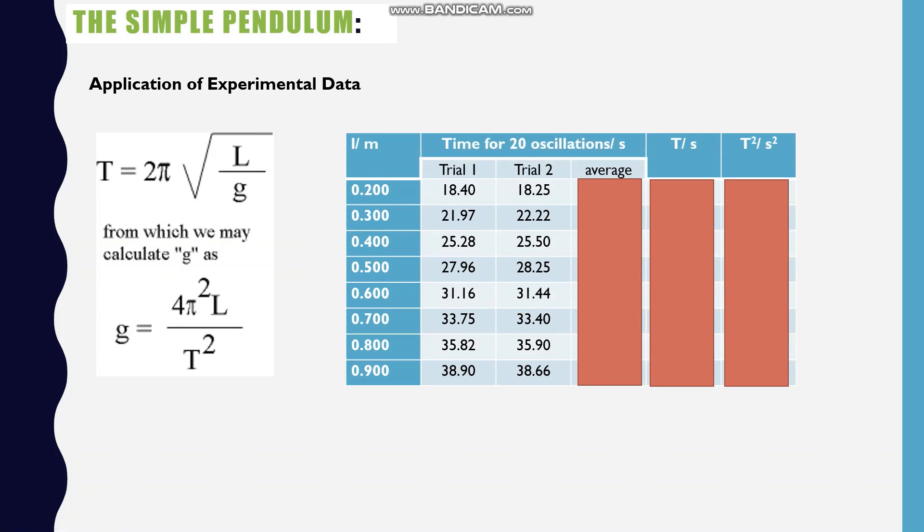If we want to find the acceleration due to gravity, we can use this equation and the results from a simple pendulum experiment. Now, these are some typical results that may be found from an experiment with the simple pendulum. We have measured the time taken for 20 oscillations two times at different lengths and then we're going to use the average. In order to get these values of t and t squared, we have to divide the average by 20. T is the time for 1 oscillation. And these times are for 20 oscillations. So, we divide by 20. We get the values of t.